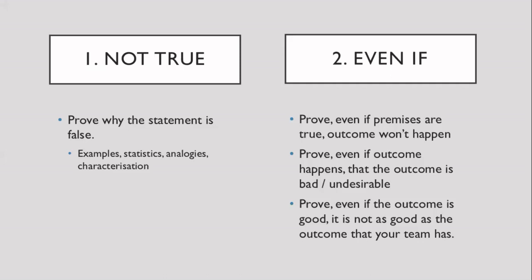The second step is the slightly more complicated step — it is known as the 'even-if' response. The aim of an even-if response is to relate with the other side and then use their own context or premise to prove them wrong. There are three possibilities: you could prove that even if the premises are true, the outcome they claim won't happen; or that even if the outcome does happen, it is bad or undesirable; or lastly, that even if the outcome is good, it is not as good as the outcome your team has.